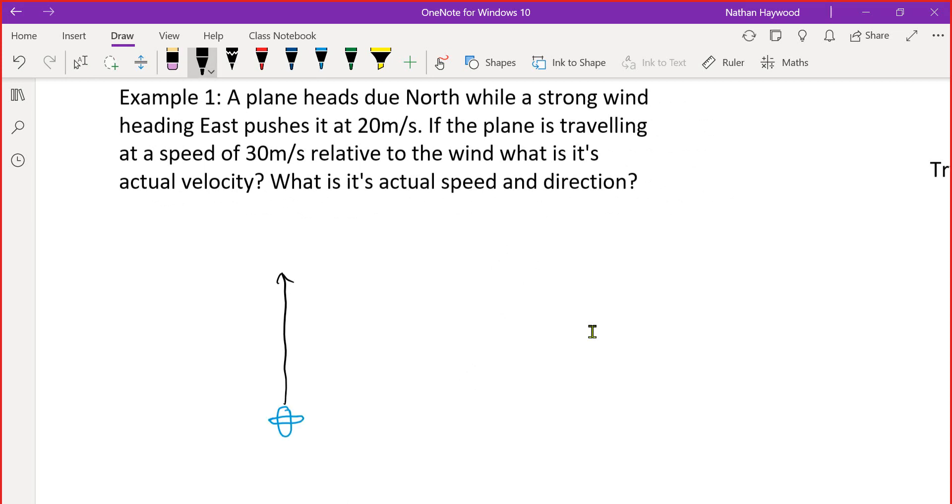Little plane, but then a strong wind pushes it. It's pushing it east. So if the plane is travelling at a speed of 30 kilometres per hour relative to the wind, what is its actual velocity? So we have the wind speed, 20i. So we've got 20 and 30.